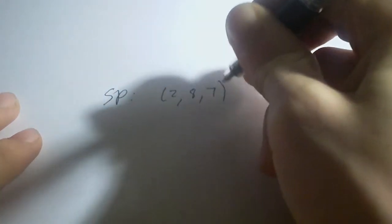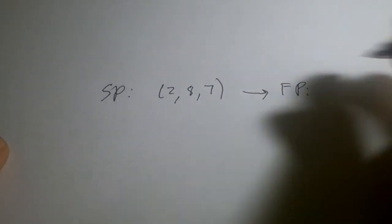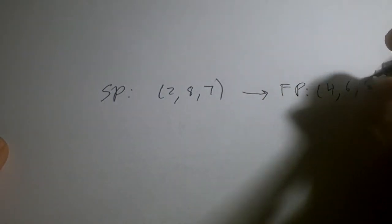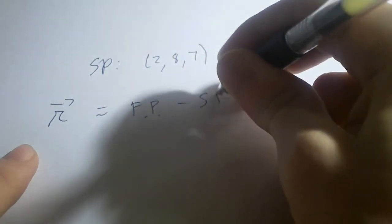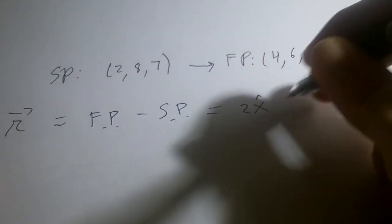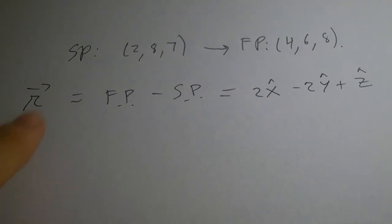Let's do an example. Find the separation vector from the source point (2, 8, 7) to the field point (4, 6, 8), and find the magnitude and unit vector of the separation vector. Recall that the separation vector is the field point minus the source point. By applying that, we get 2 x-hat minus 2 y-hat plus 1 z-hat. That's the separation vector.